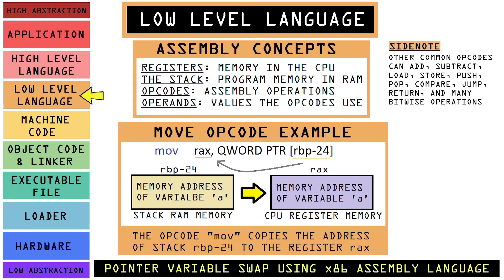Looking at the move opcode in assembly: in this example we are taking the memory address of variable A and copying that into a register so we can save it and swap it with variable B later. Also, in assembly you cannot directly move memory from one place in RAM to another place in RAM — we will find out why when we get to the hardware level.